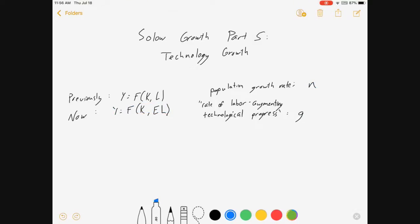All right, I think we're ready for this now. So, what we're going to do is we're going to make little y be equal to big y over E L. It's output per efficient worker.